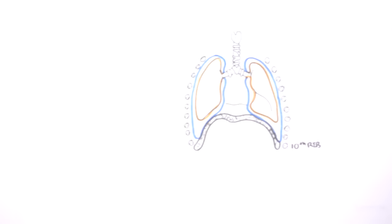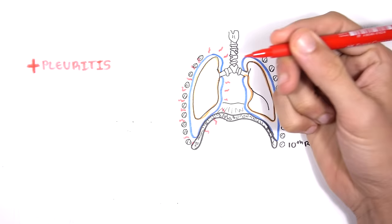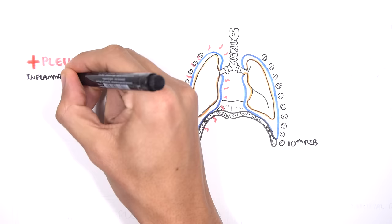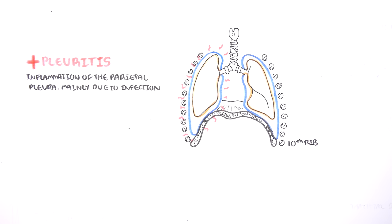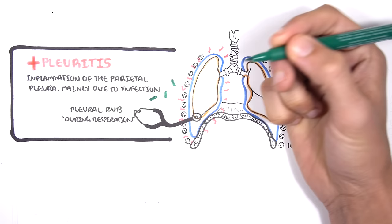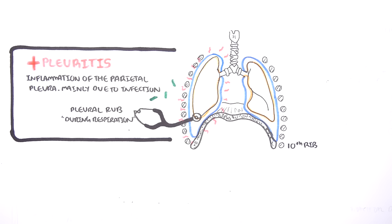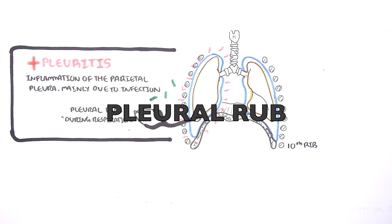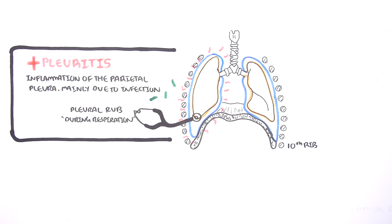Let's look at some clinical anatomy of the lung pleura, beginning with pleuritis, which is inflammation of the parietal pleura, mainly due to viral infections. Clinical signs include shortness of breath and pleuritic chest pain, characterized by pain when breathing in. Pleuritis also has a characteristic pleuritic rub which can be heard during expiration and inspiration — it sounds like creaking or grating. The main causes are viruses, but autoimmune conditions can also cause pleuritis.